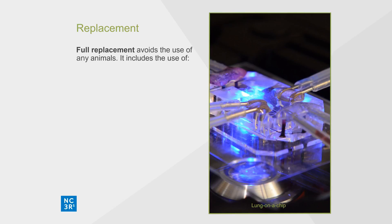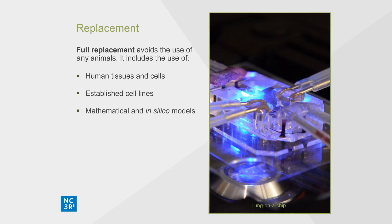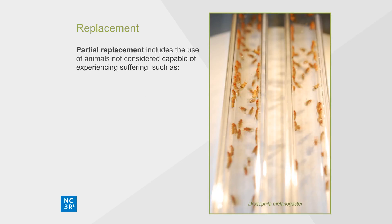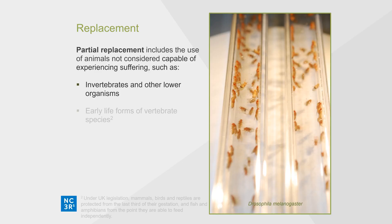Full replacement avoids the use of any animals. It includes the use of human tissues and cells, established cell lines, mathematical and in silico models, and human volunteers. Partial replacement includes the use of animals which, based on current scientific thinking, are not considered capable of experiencing suffering. This includes invertebrates and other lower organisms and early life forms of vertebrate species.